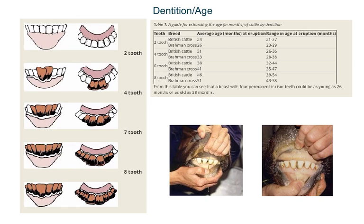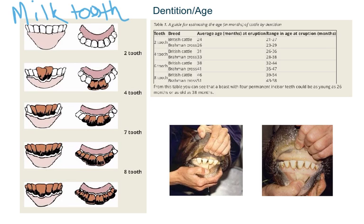Dentition or age is particularly important. There are two ways to measure age: by looking at the teeth, and by ossification — the cartilage turning to bone in the spinal processes. An animal with all its baby teeth is called a milk tooth, usually up to about two years of age. Once it has erupted its first two teeth, it's called a two-tooth; four teeth is a four-tooth; six teeth is a six-tooth; and a full mouth or eight-tooth is reached at about four to five years of age.